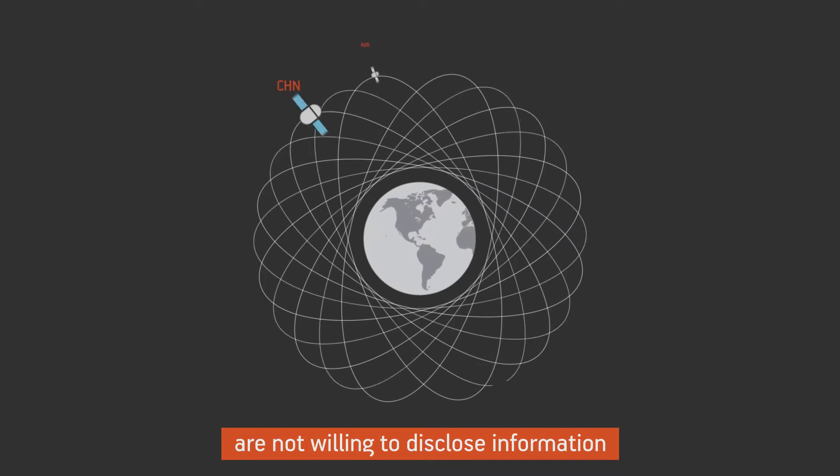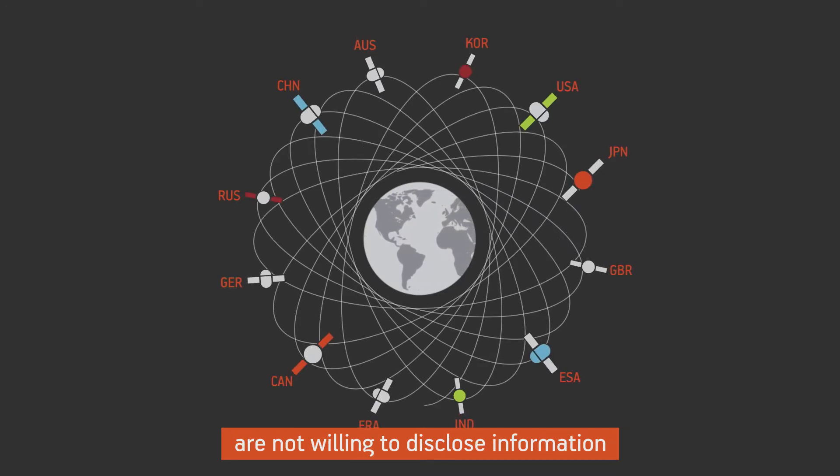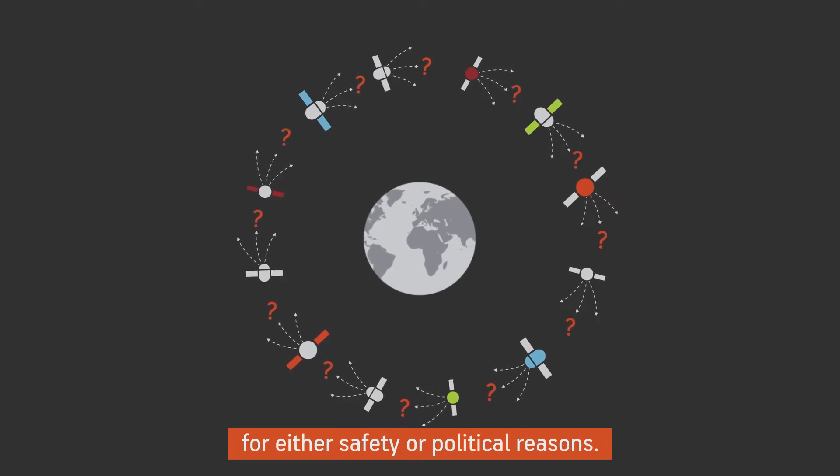Most satellite owners sharing the orbit are not willing to disclose information on the movement of their satellites, for either safety or political reasons.